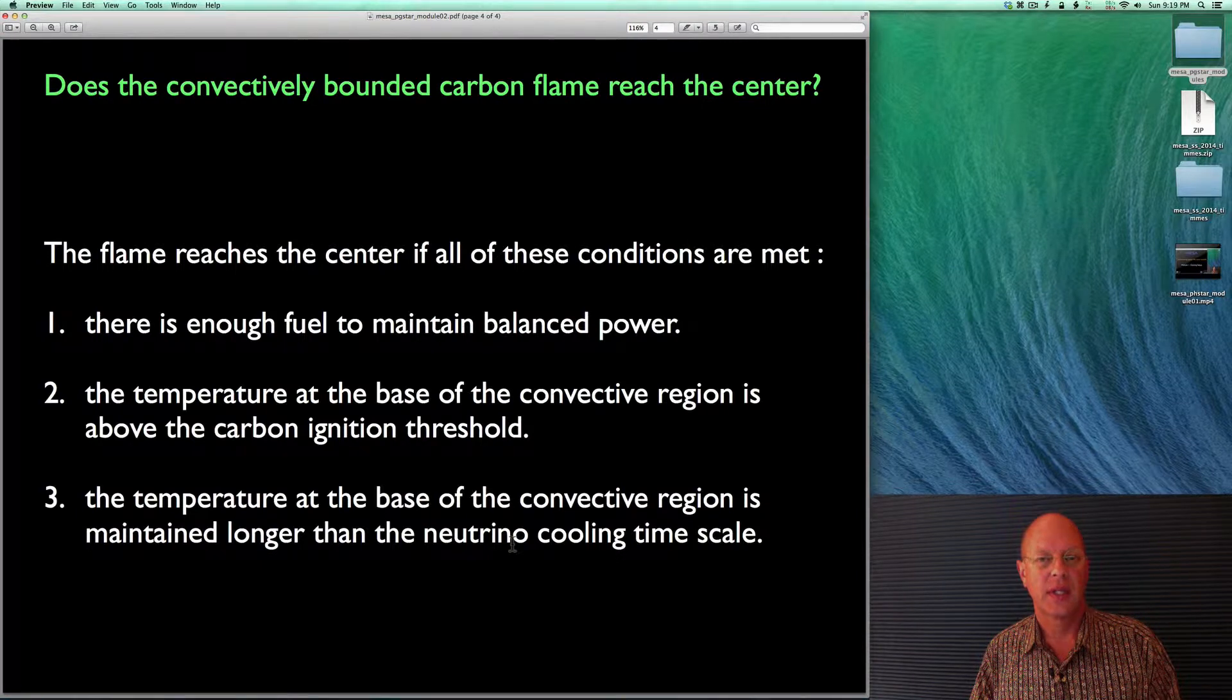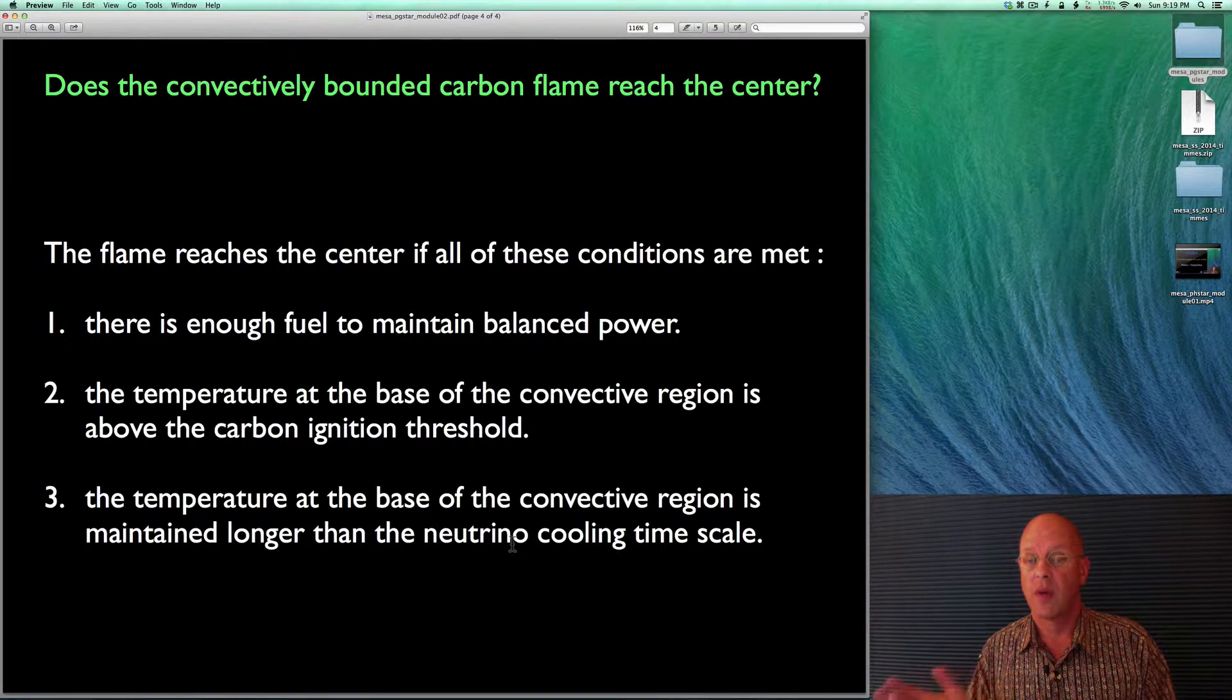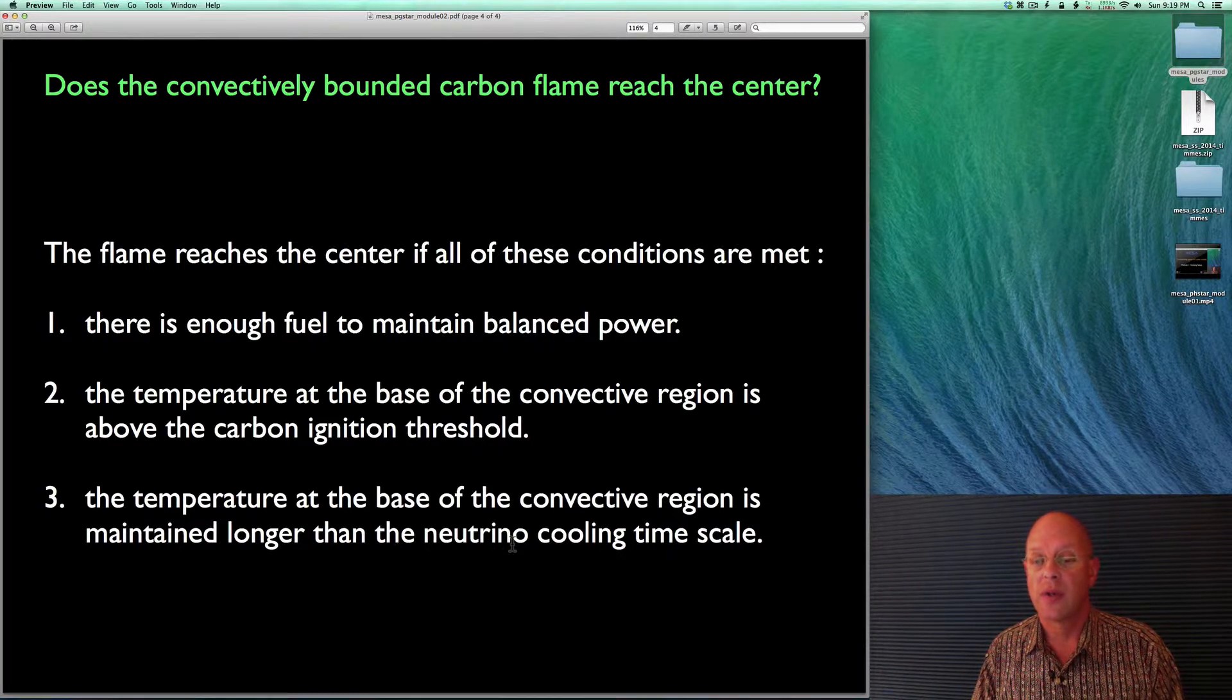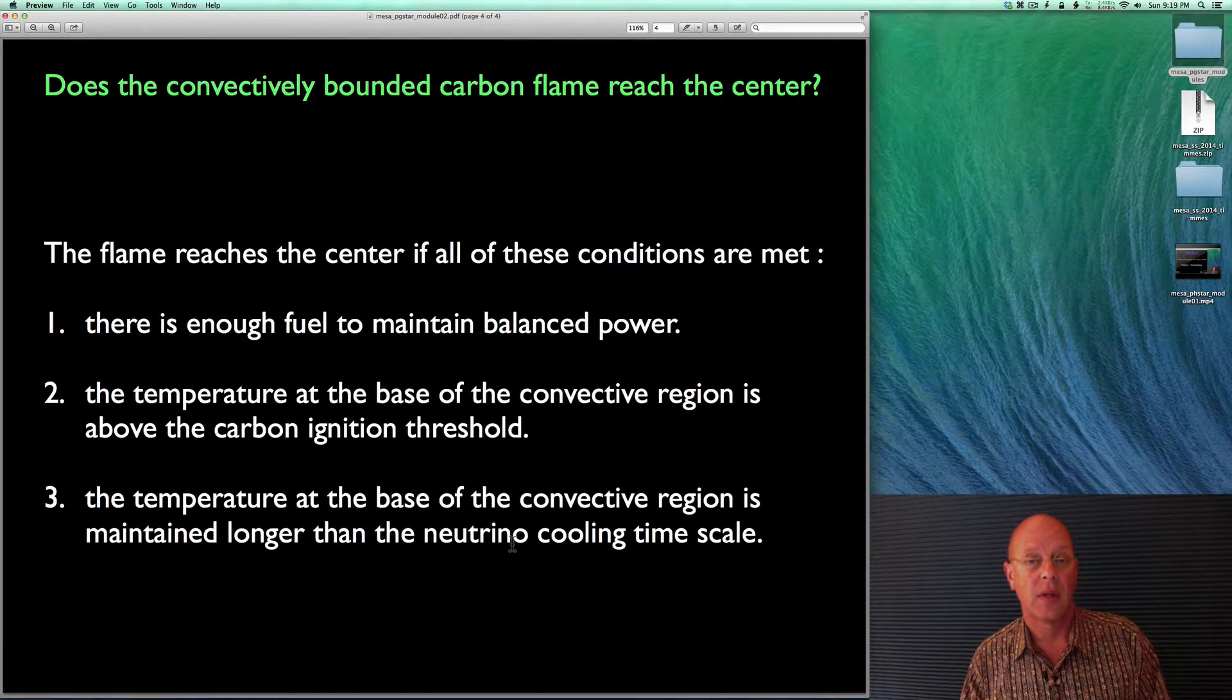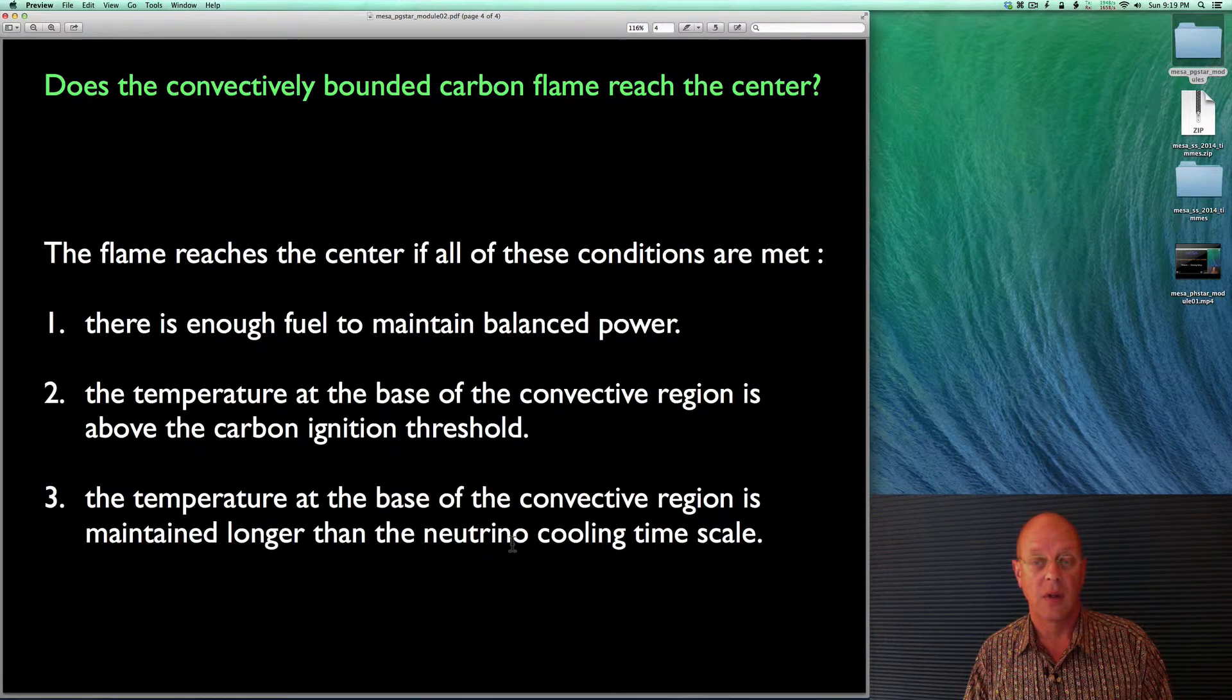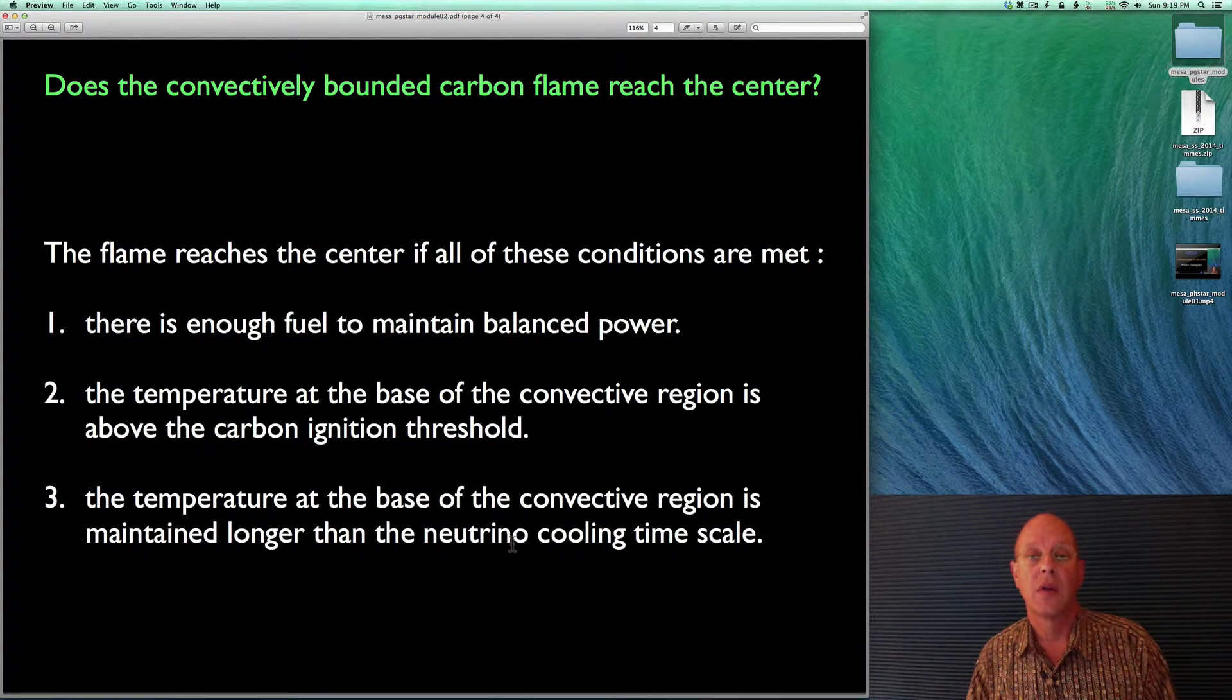One of the key questions that is going to determine the fate of this super-AGB star, whether it becomes a massive white dwarf or a massive star supernovae, is does that convectively bounded flame reach the center? And there are three conditions that all have to be met if the flame is going to make it all the way toward the center. One is there's enough fuel to maintain the balanced power condition of nuclear burning balancing thermal neutrino losses. The second one is that the temperature at the base of the convective region is above the carbon ignition threshold. And the third one is that you've got to keep the temperature hot enough long enough such that the flame does not die because of thermal neutrino losses.